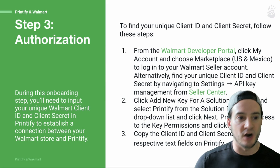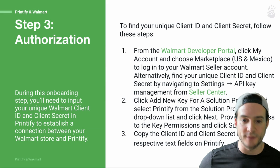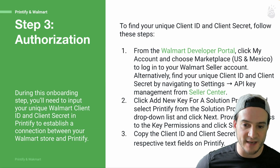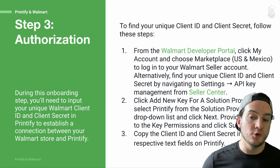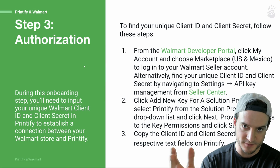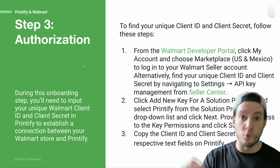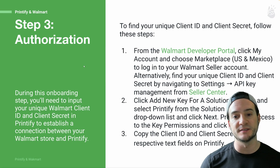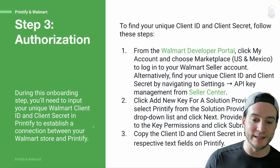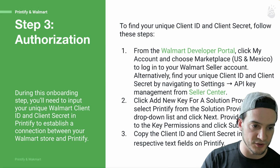Step three: authorization. From the Walmart developer portal, click My Account and choose the marketplace — US and Mexico — to log into your Walmart seller account. Alternatively, find your unique client ID and client secret by navigating to Settings, then API Key Management from Seller Center. Click Add New Key for a solution provider and select Printify from the solution provider dropdown. When you go to the API Key Management center you'll generate a specific secret key for Printify. Provide full access for Printify, click Submit, then copy the client ID and client secret into Printify.